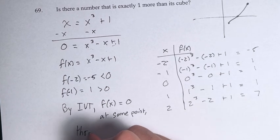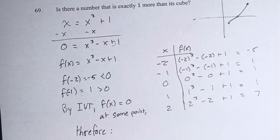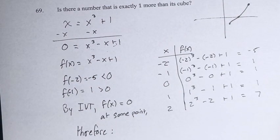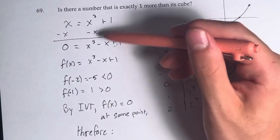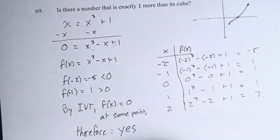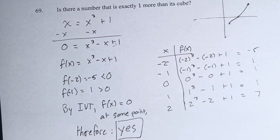And therefore, the answer to this question—is there a number that is exactly one more than its cube? Well, we proved that the function that this problem creates does have a value at which it is equal to zero. Therefore, our answer is yes. Thank you.